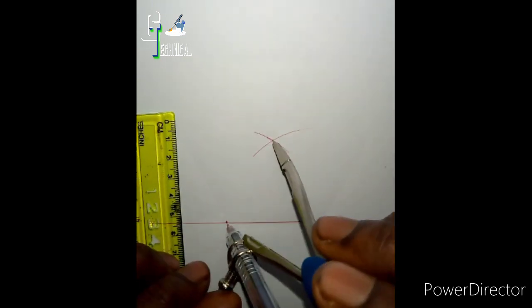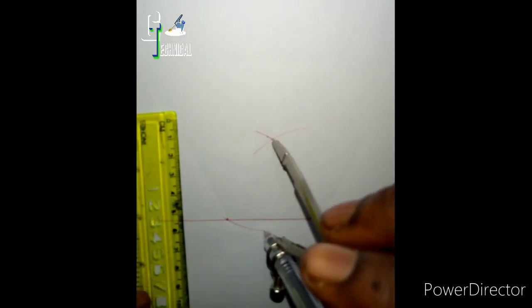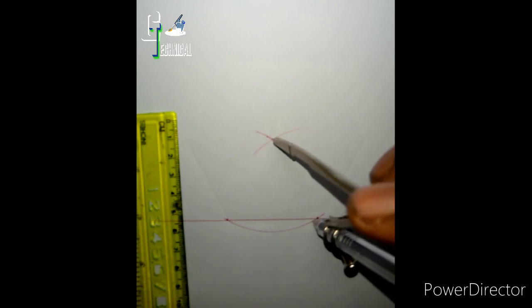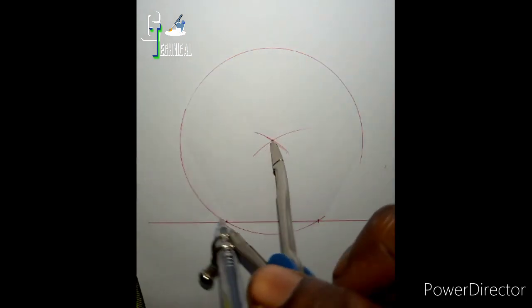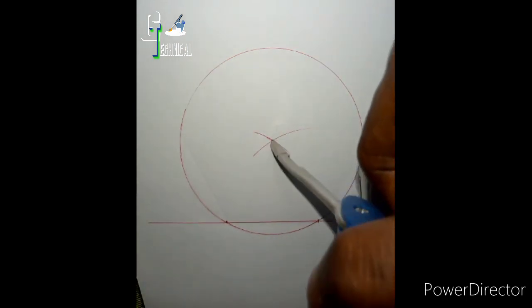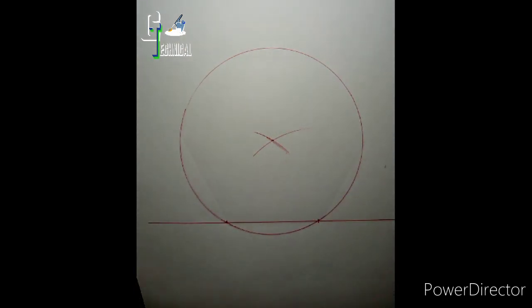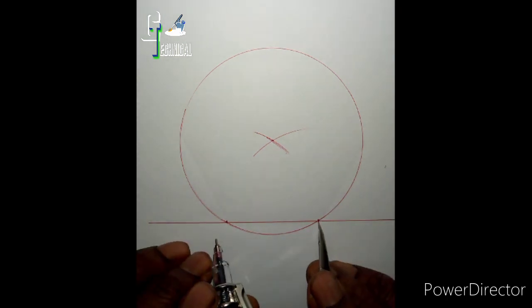Now from there we'll place it, make sure it touches the two points. As you can see now we draw our circle. And we draw our circle. Okay, so after we've done that we take this same measurement which is 5 cm.